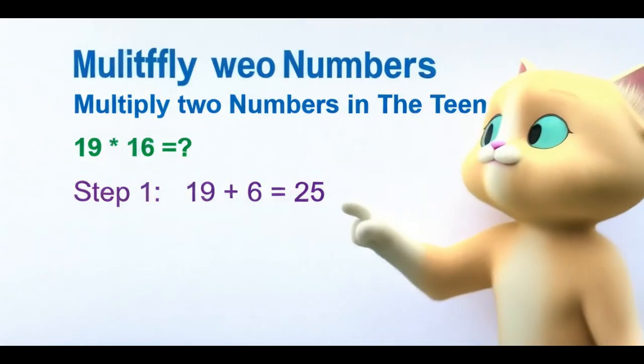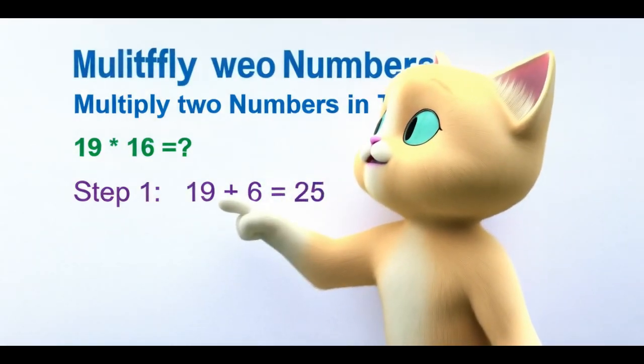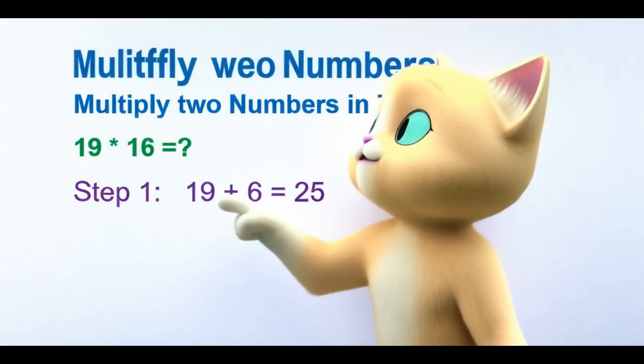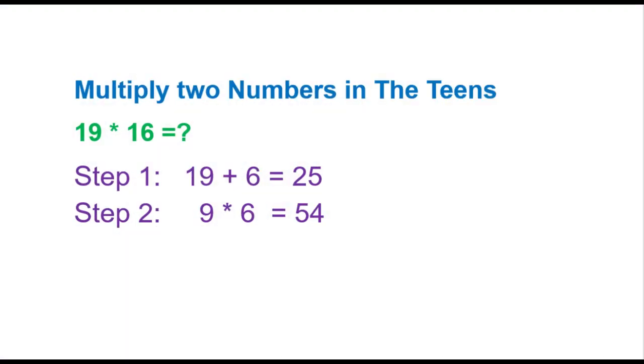I will work on the second step. Multiply the one's place of both first number and the second number, which is 9 times 6 equals 54.